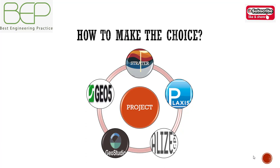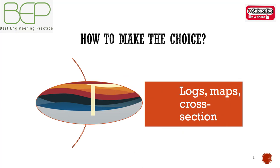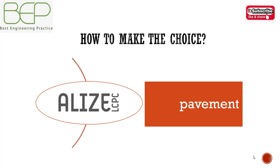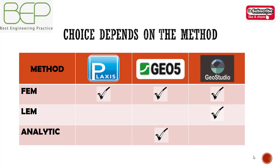To make a choice of geotechnical software, you should base your decision on many criteria. To represent logs, cross-sections, and maps of a site, it is better to use Strata 5. For pavement design, you should use ALIZE, which is one of the most used software tools in the world, though it is only available in French. The choice among the other three software depends on several factors. The first criterion is the method: PLAXIS is based only on the finite element method, GEO5 is based on finite element method and analytical method, and GeoStudio is based on finite element method and limit equilibrium method.